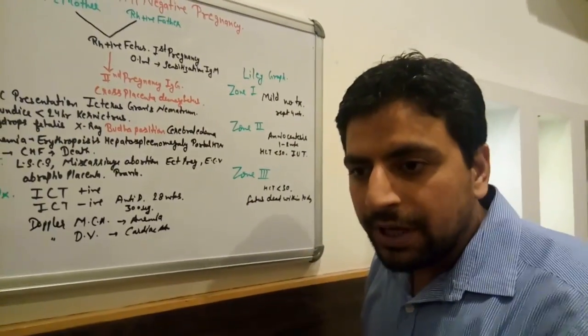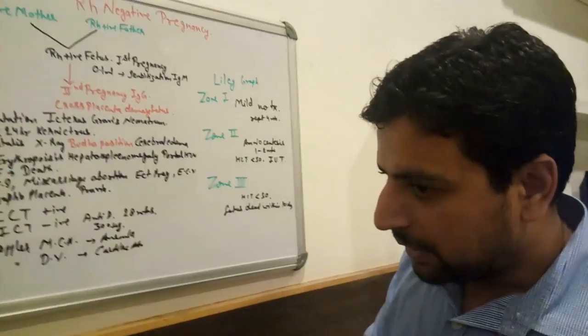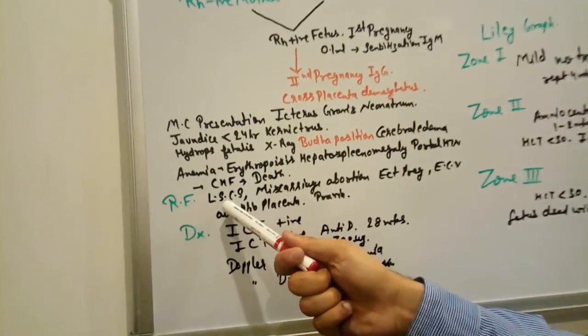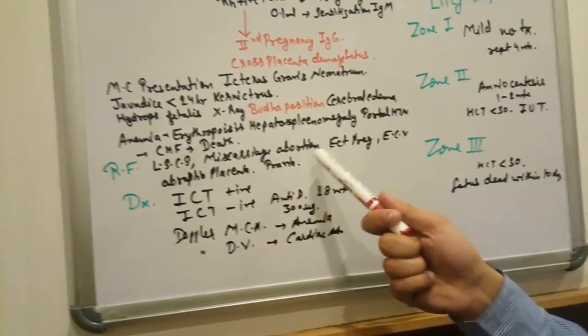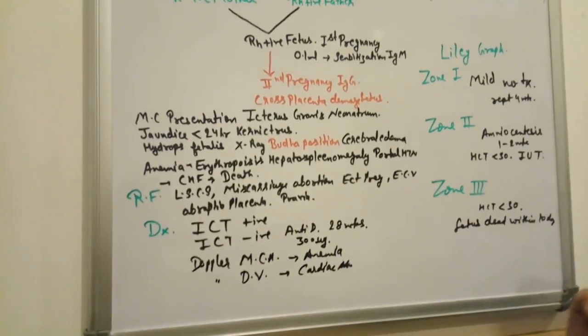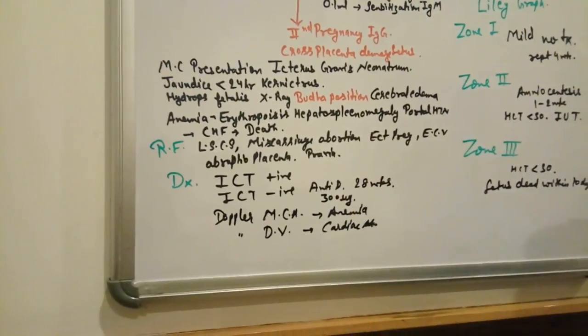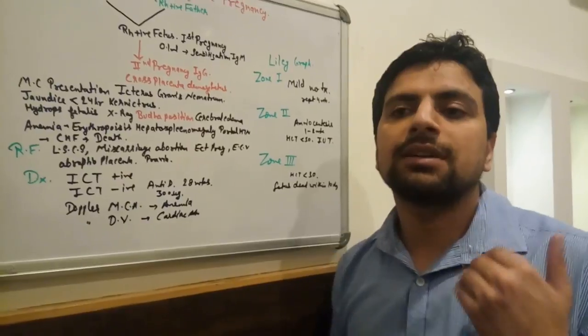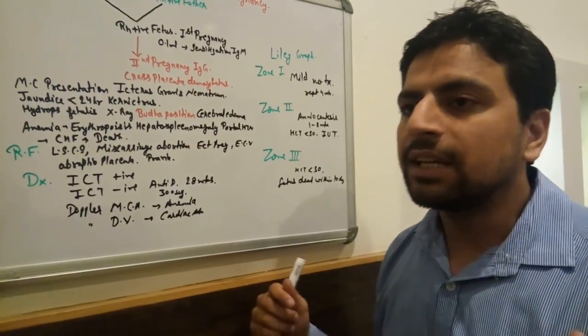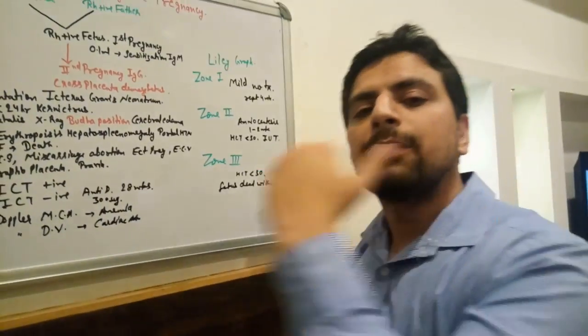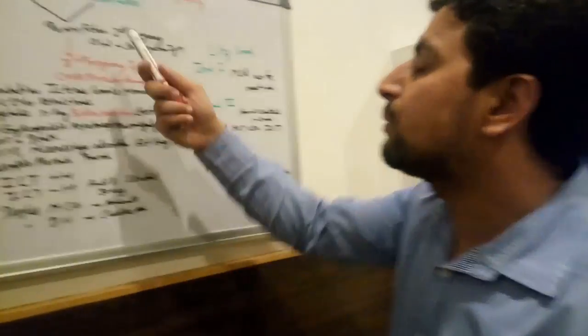How does it enter from fetus circulation to mother circulation? Risk factors include lower segment caesarean section, miscarriage, abortion, ectopic pregnancy, external cephalic version, abruptio placenta, and placenta previa. In those situations there is sometimes blood loss or bleeding, and some blood from fetus to mother enters. Only 0.1 ml is sufficient for sensitization.